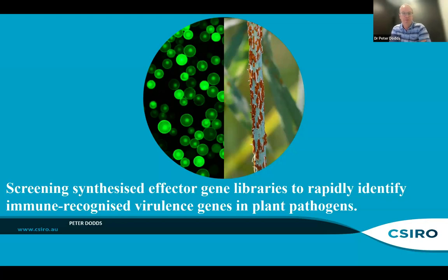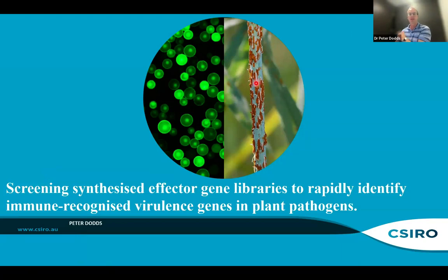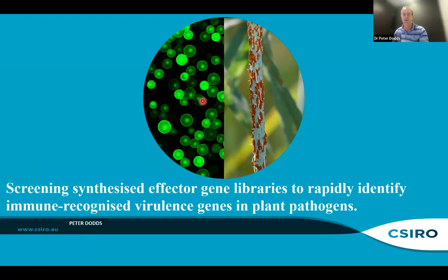I'll give a brief introduction on this slide with just two images. On the right, we have an image of a wheat stem affected by the stem rust fungus — all these orange pustules appearing on it. This is the disease system we've been working on. On the left, you see images of plant cell protoplasts — individual cells extracted from a plant leaf and maintained in culture. This is a system we use for many of the experiments I'll tell you about today.